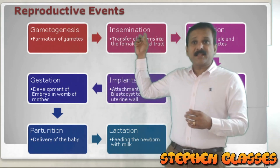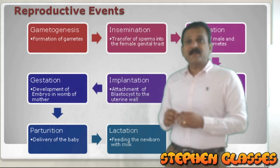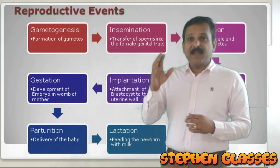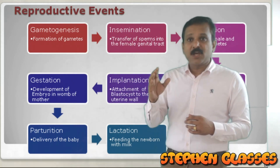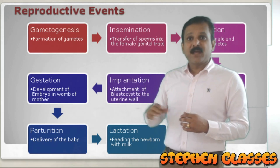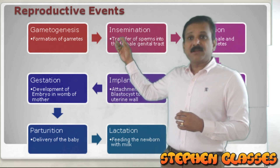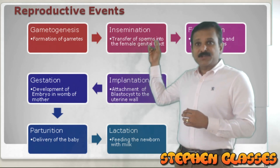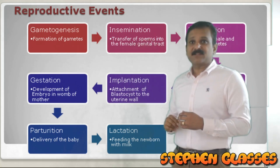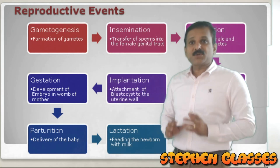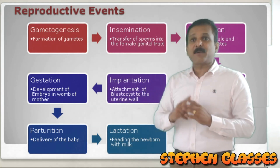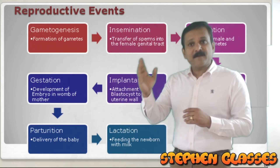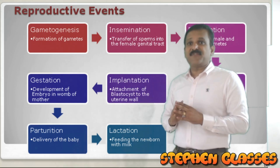After formation of the gametes, there is another step called insemination. What is insemination? The male individual will transfer the male gamete into the female genital tract, and that is called insemination. So insemination is the transfer of the sperm into the female genital tract. Now both gametes are present inside the female individual.